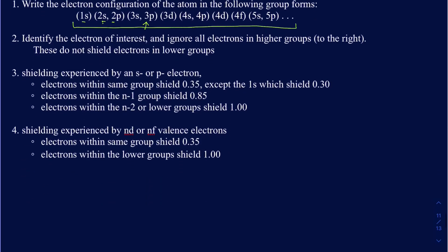For shielding of electrons in s or p orbitals, here are the rules: electrons in the same group shield by 0.35 units each (except in the 1s group, where they shield by 0.30 units). Electrons in the n−1 group shield by 0.85 units each. Electrons in groups lower than n−1 shield by 1.0 unit each.